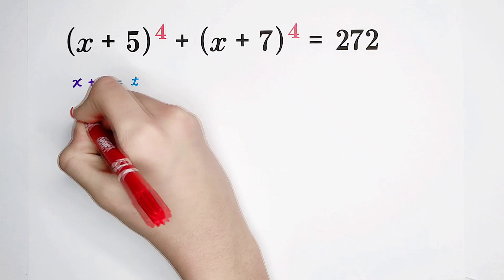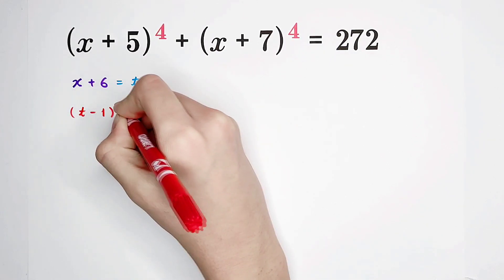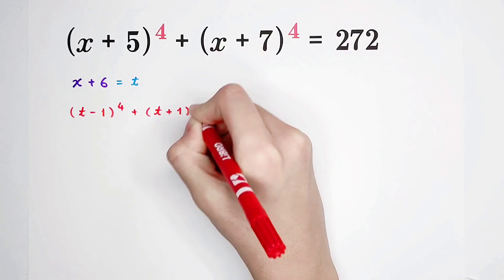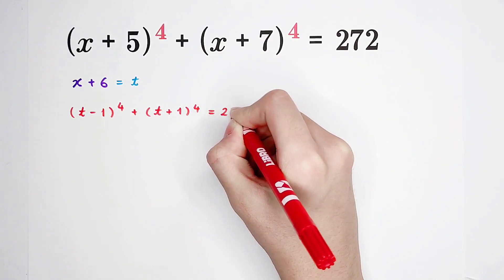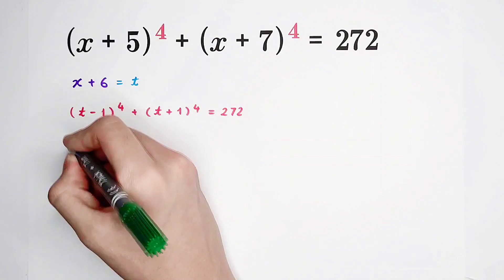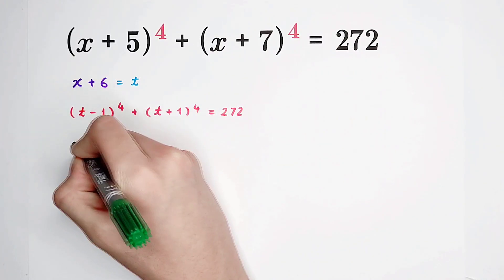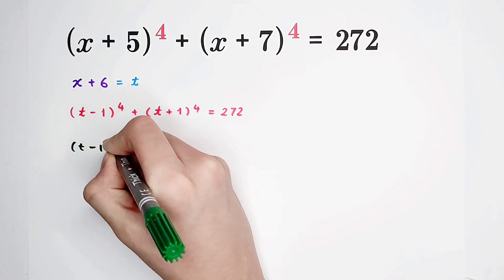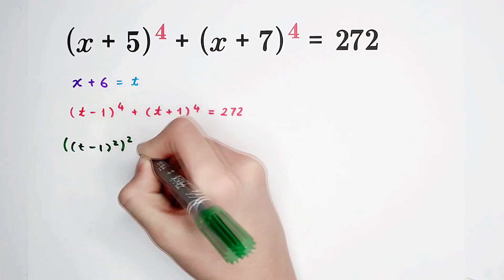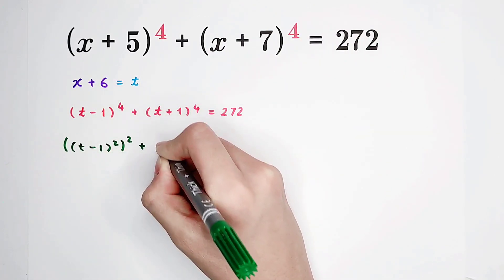So here, t minus 1 to the power of 4, and here is t plus 1 to the power of 4, equals 272. 4 is just 2 times 2, so this guy is t minus 1 squared, then squared. This as well.